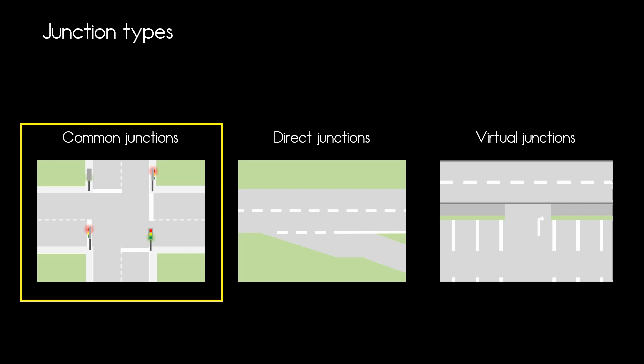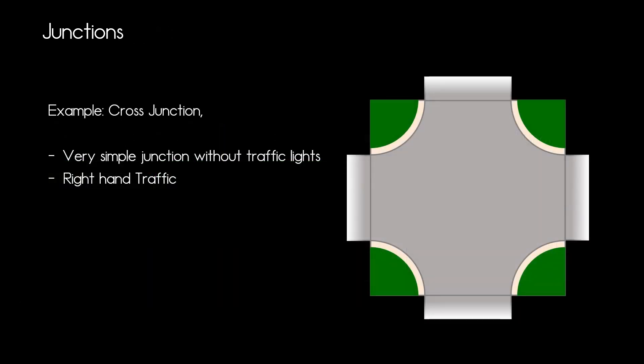We will have a look at a simple cross junction and build our common junctions for this cross junction. This cross junction will serve as our example so I can explain how to build common junctions in OpenDrive. This is a very simple junction of course, and there are no traffic lights in this junction. But we have sidewalks and we have right hand traffic.